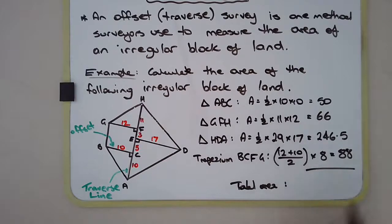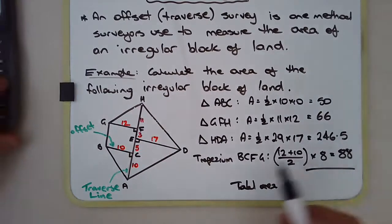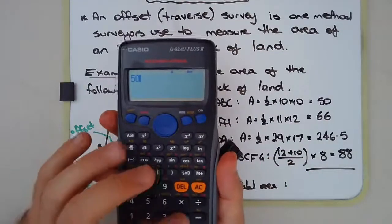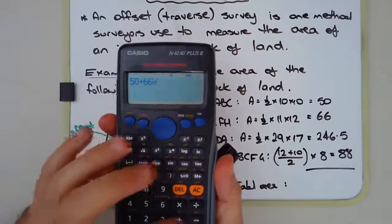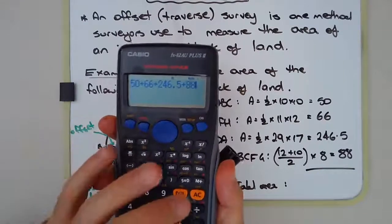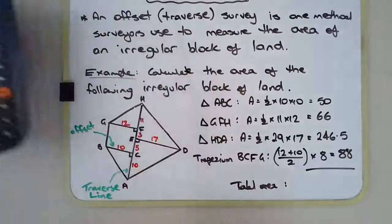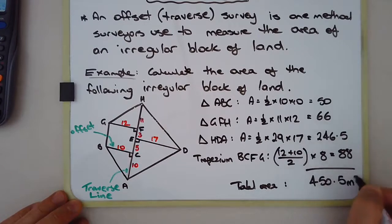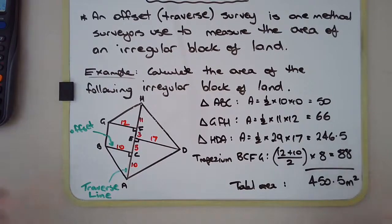We just add them up. So 50 plus 66 plus 246.5 plus 88. And we get 450.5. And it'll be in square meters.